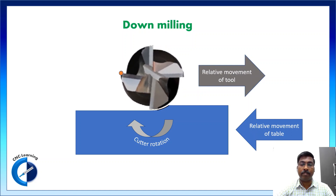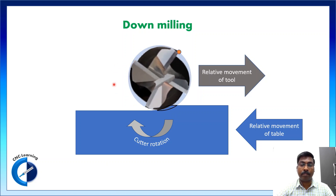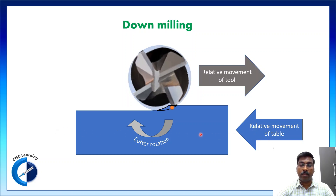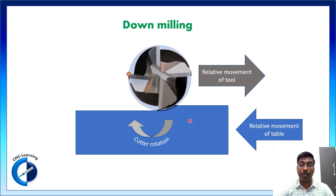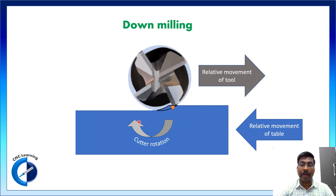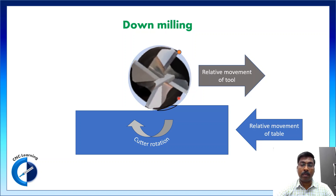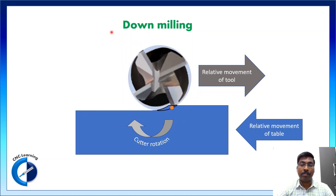First we will talk about down milling. The cutter rotation is in one direction and the table movement is in the same direction. When we say table movement, it is the relative movement of the table — in some cases the table moves and in some cases the tool moves. When the cutter movement and the relative movement of the table are in the same direction, it is down milling.